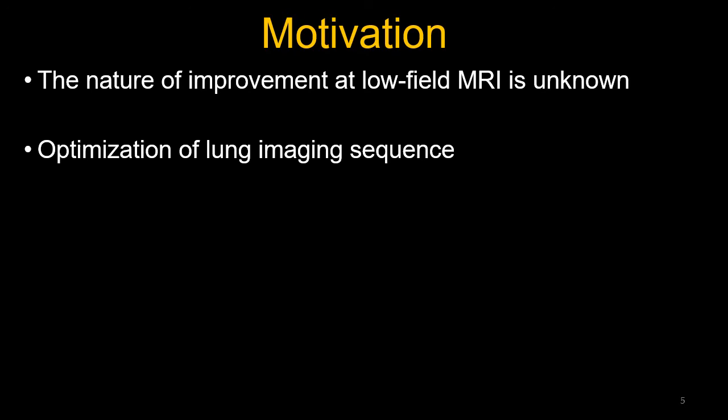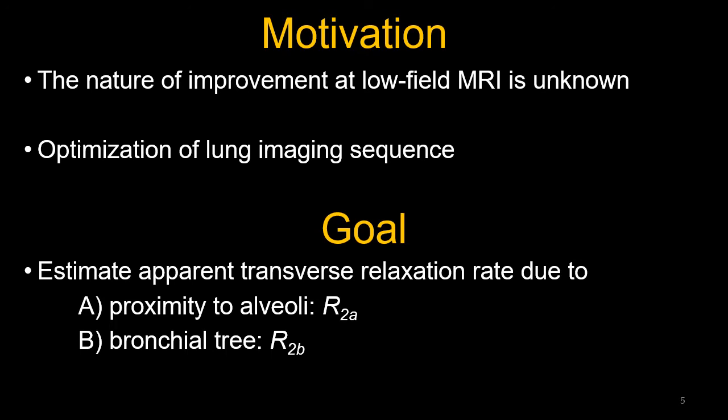A better understanding of these effects would allow us to optimize sequences for 0.55T and also anticipate performance at other B0 field strengths that haven't yet been reduced to practice. The goal of this simulation study is to predict apparent transverse relaxation in lung parenchyma due to the proximity to alveoli and the bronchial tree. We studied these effects separately and denote the relaxation rates R2a and R2b for alveoli and bronchial tree respectively.